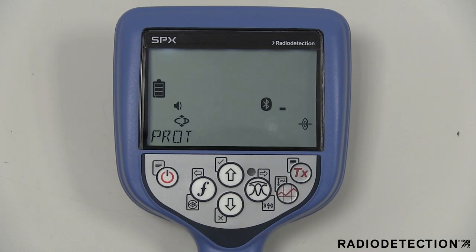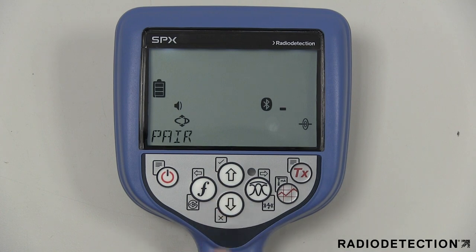The protocol action allows you to tell the locator what format the data should be sent in to the external device. The reset option can be used to forget all connections on the device. The pair submenu has two options allowing you to connect to a TX transmitter or an external device.